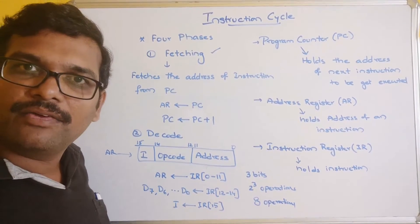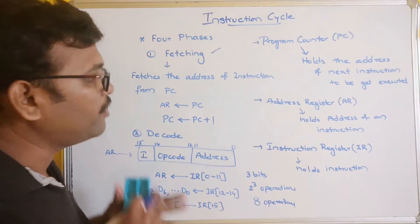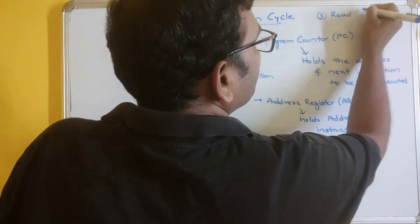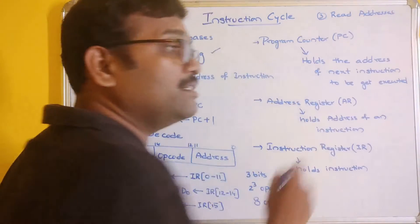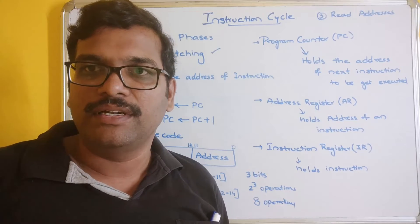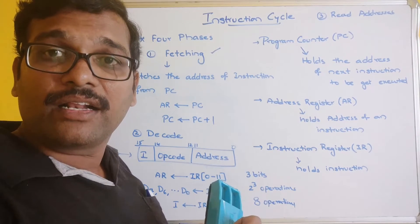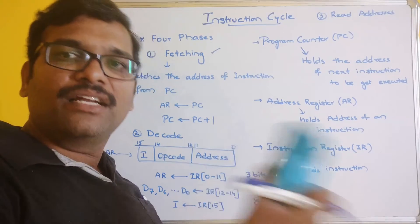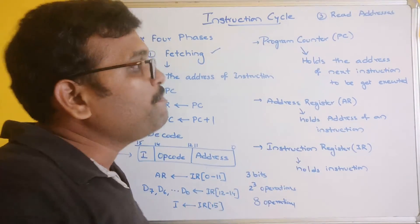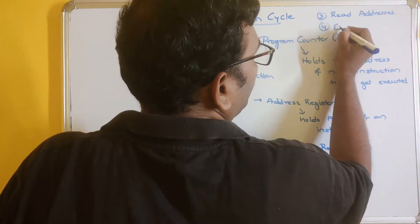The third phase is reading the address. The address is read from the IR register. This phase also categorizes what type of instruction is to be executed — whether it is a memory reference instruction, a register reference instruction, or an I/O reference instruction. The fourth phase is execution: whatever instruction has been decoded is executed. This completes the process for a single instruction.